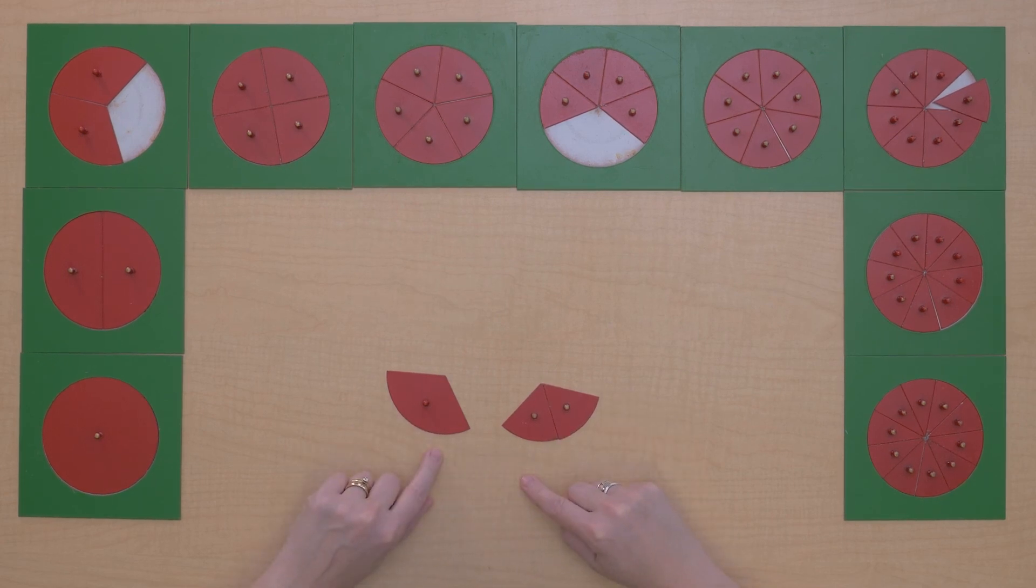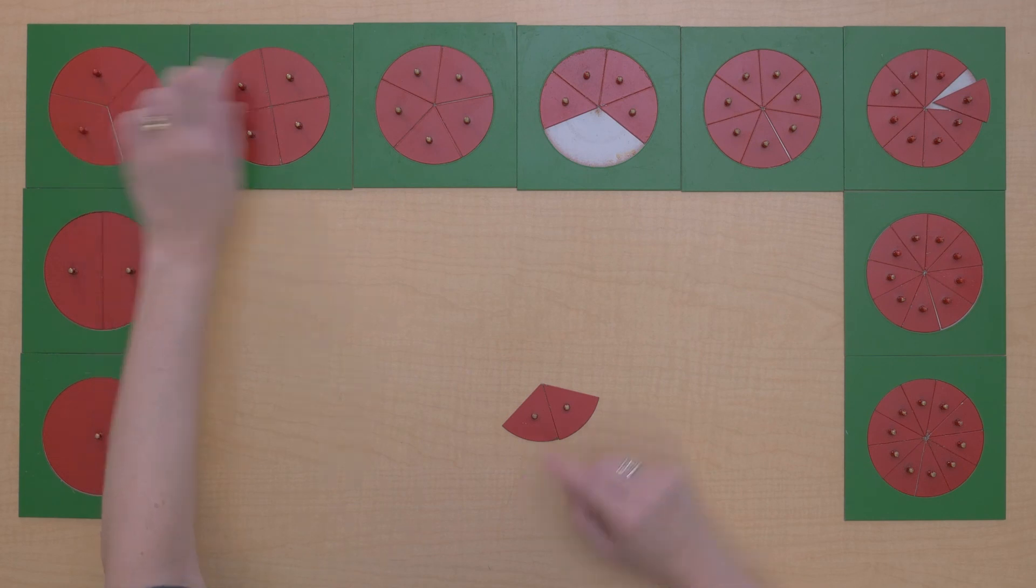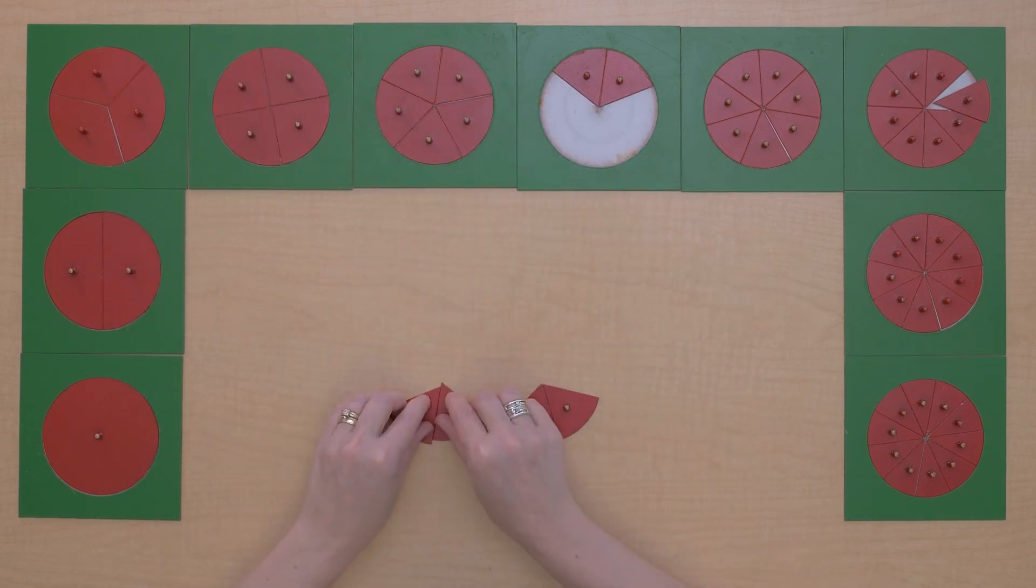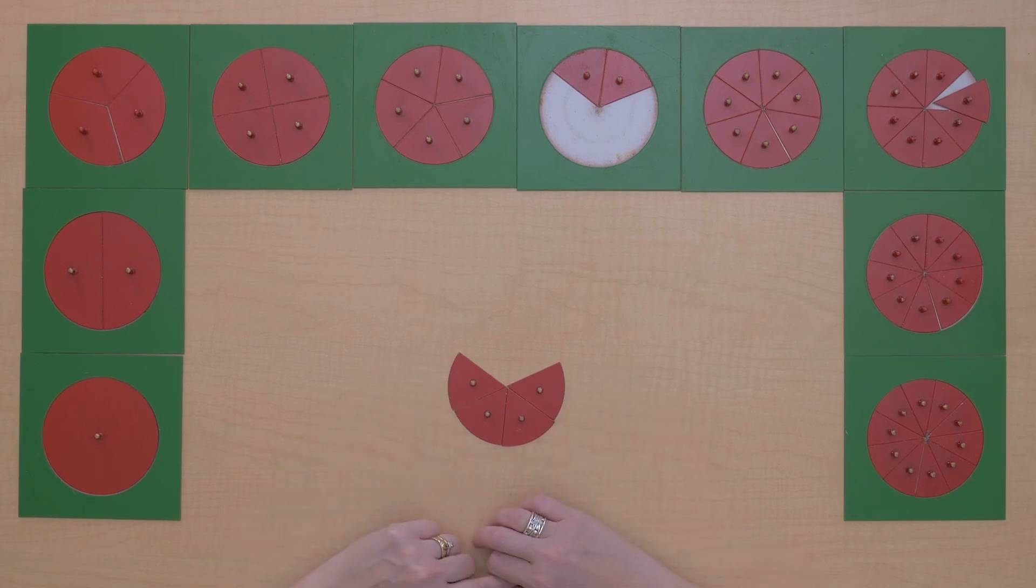We need to convert, don't we? Let's turn that one-third into two-sixths, and then we can put it together. So we get four-sixths.